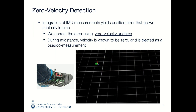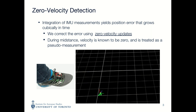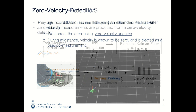Since MEMS-based IMUs produce measurements with a high degree of noise, simply integrating the measurements produces position error that grows cubically in time. Our system is a zero-velocity-aided inertial navigation system, which corrects for this error by detecting when the user's foot is stationary. Since the IMU is mounted on the foot, we know that when the foot is stationary the velocity state of the IMU is zero. We can compare the current velocity estimate with the known zero velocity measurement, which allows us to directly observe and remove the error from the system.